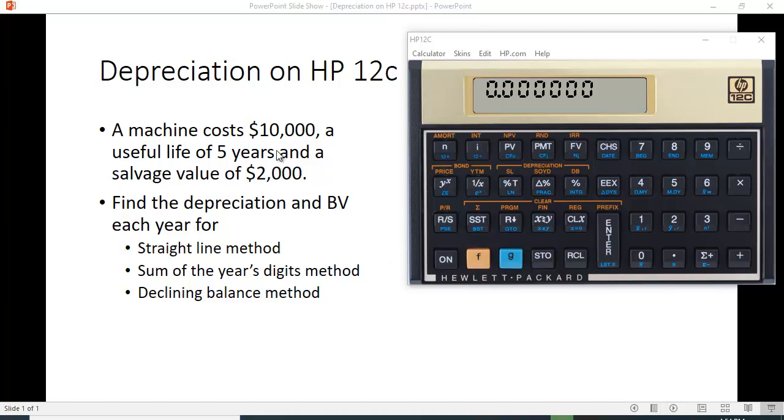Let's do an example. A machine costs $10,000, has a useful life of five years, and a salvage value of $2,000. You're going to put the $10,000 in as the present value, the $2,000 as the future value, and tell it that the useful life is n, which is five years.